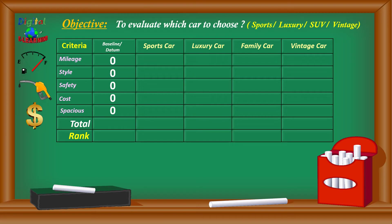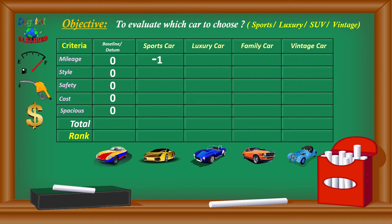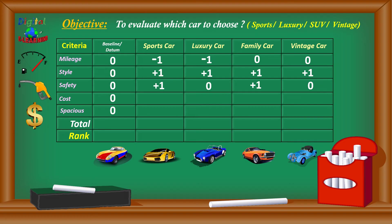For each criterion, we assign plus one if better than the baseline, zero if same, and minus one if worse. Starting with mileage: the sports car is worse, so minus one; the luxury car is also minus one; the family car has the same mileage, so zero; and the vintage car is also zero. For style, all four — sports car, luxury car, family car, and vintage car — are each given plus one. For safety features like airbags, the sports car scores plus one for additional options, the luxury car may not have them so it scores differently, the family car does have additional safety features, and the vintage car is the same as the baseline.